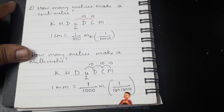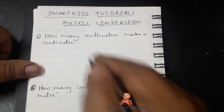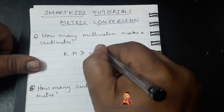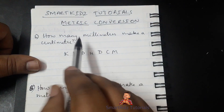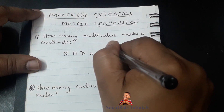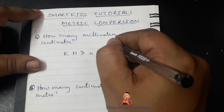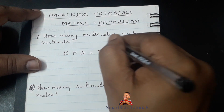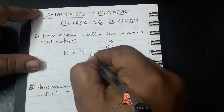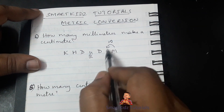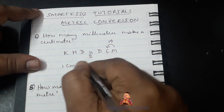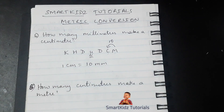Coming to our fourth question: how many millimeters make a centimeter? Once again we write King Henry Died Unexpectedly Drinking Chocolate Milk. Millimeters is here and centimeter is over here, which means we are now moving towards our left — we have to multiply. Since it's moving only one place, it's multiplied by 10. So 1 centimeter equals 10 millimeters.